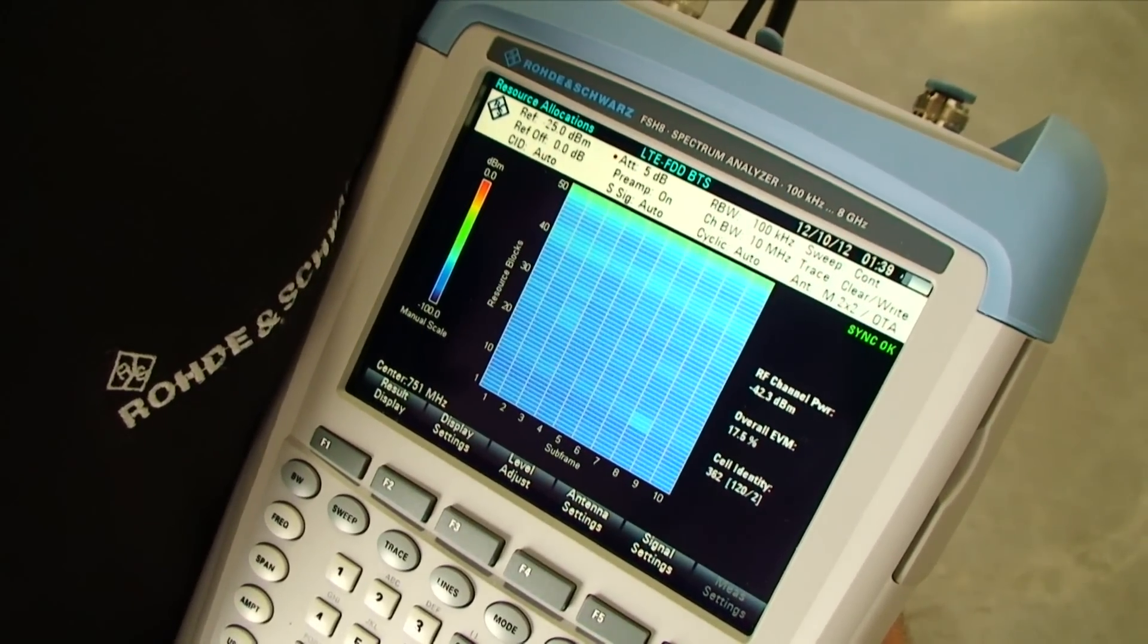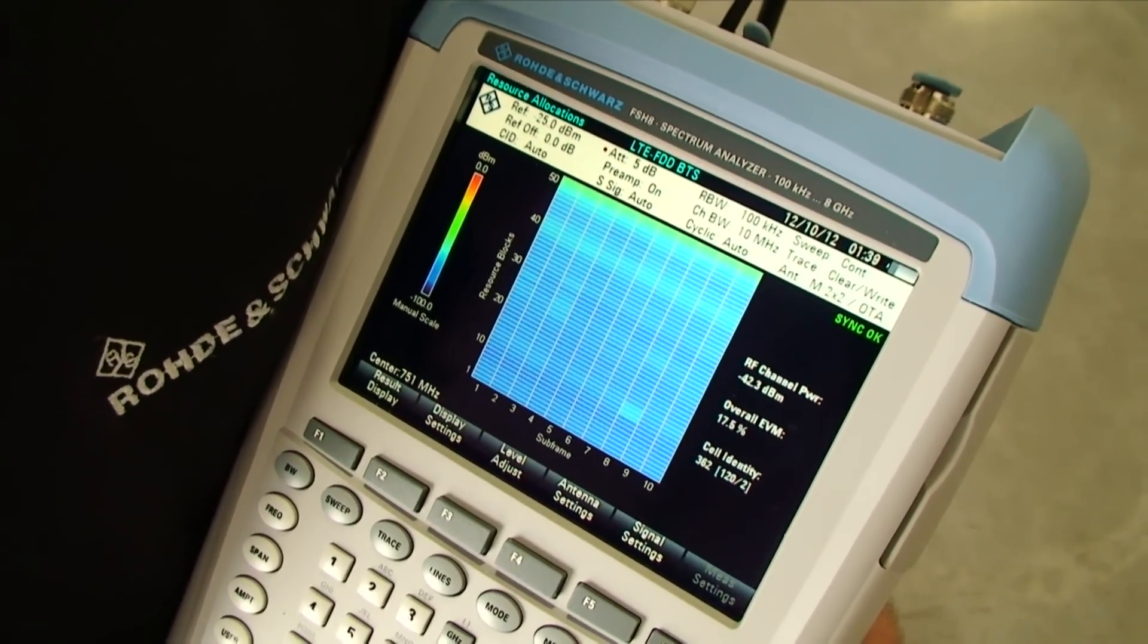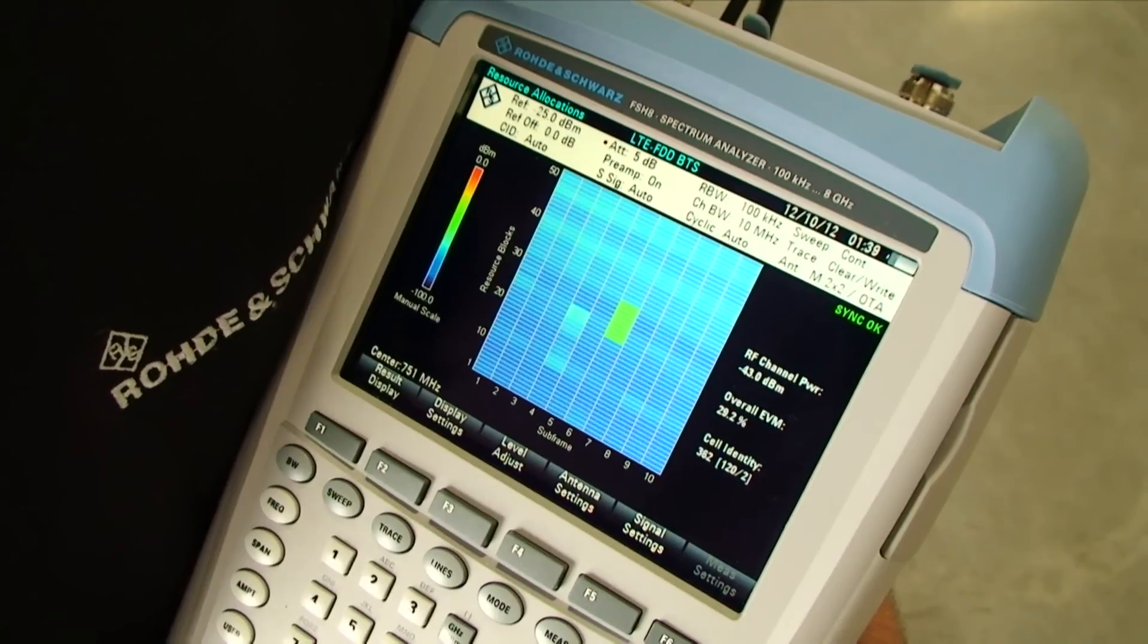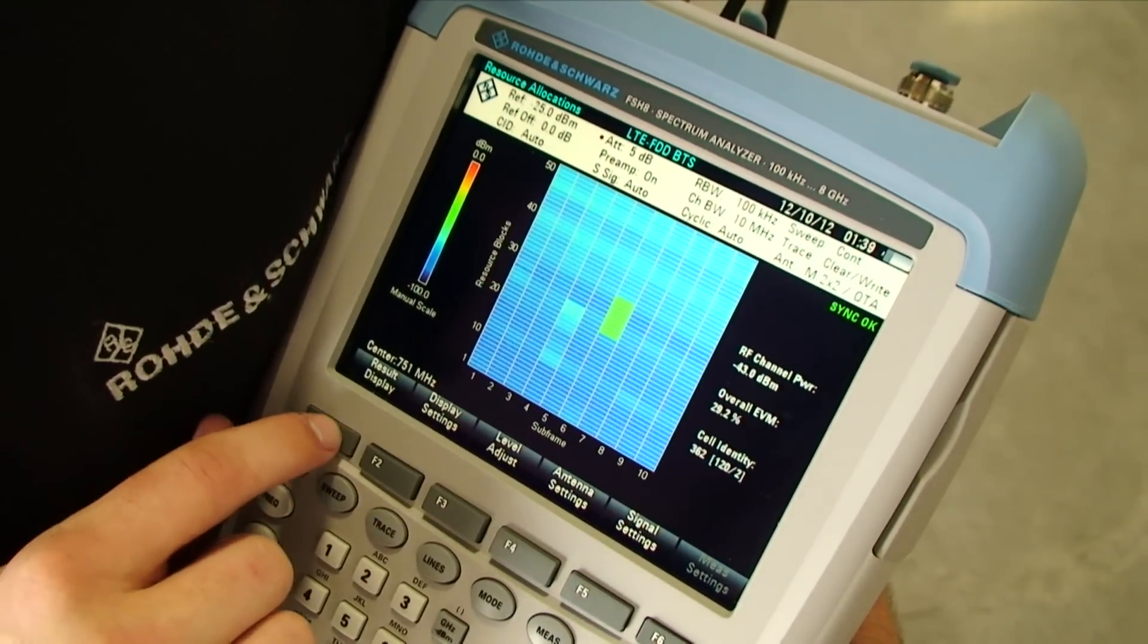Again, on the right side, we have our measurements on the screen for channel power, EVM, and cell identity. This is kind of nice to see just to get an idea of what's going on.